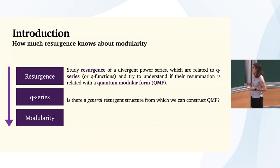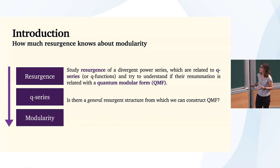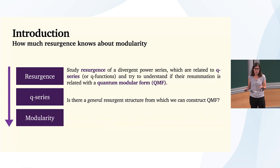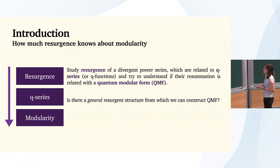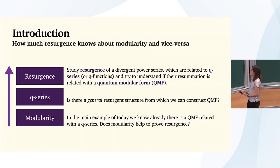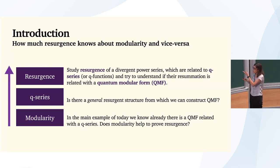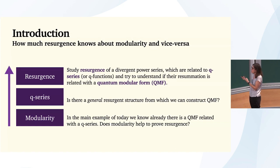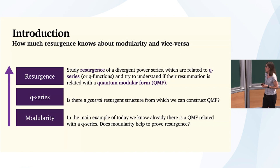More generally, what I will propose in my talk today is an attempt to give a general picture where you can expect quantum modularity — a general resurgence structure from which you may always find quantum modular forms. But in my main example, we will rather go in the opposite direction. We already know there is a quantum modular form, and the question will be: can this modularity property tell me something about the resurgence structure associated to a certain Q-series?